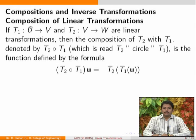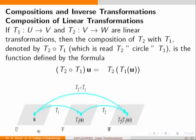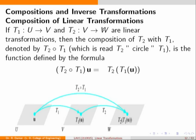The composition T2∘T1 maps from U to W: any element in U goes to vector space W. In the diagram, U, V, W are three vector spaces. T1 maps u to T1(u) in V, and then T2 maps T1(u) to T2(T1(u)) in W. So T2∘T1 is the transformation from U to W.